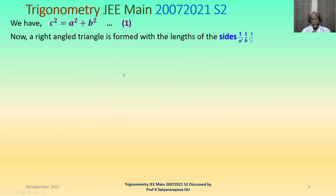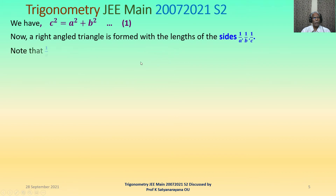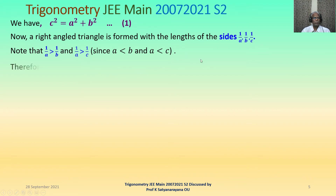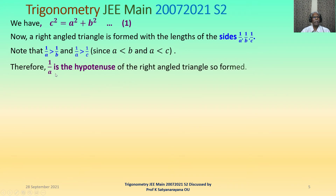It is given that a right angled triangle is formed with the lengths equal to the reciprocals of the sides of the earlier triangle, that is with sides 1/a, 1/b, and 1/c. Now note that 1/a will be greater than 1/b and 1/a is greater than 1/c, because a is less than b and a is less than c. Therefore 1/a is the side of the largest length, and since it is in a right angled triangle, 1/a must be the hypotenuse.